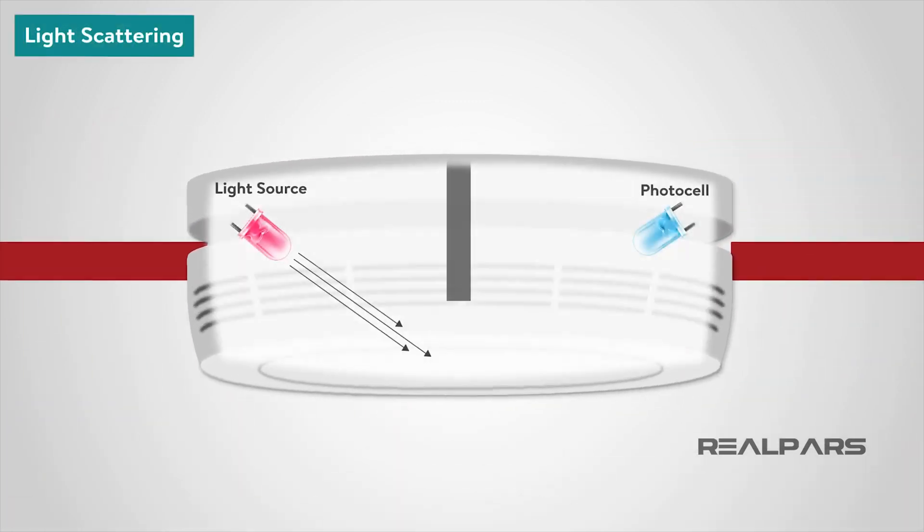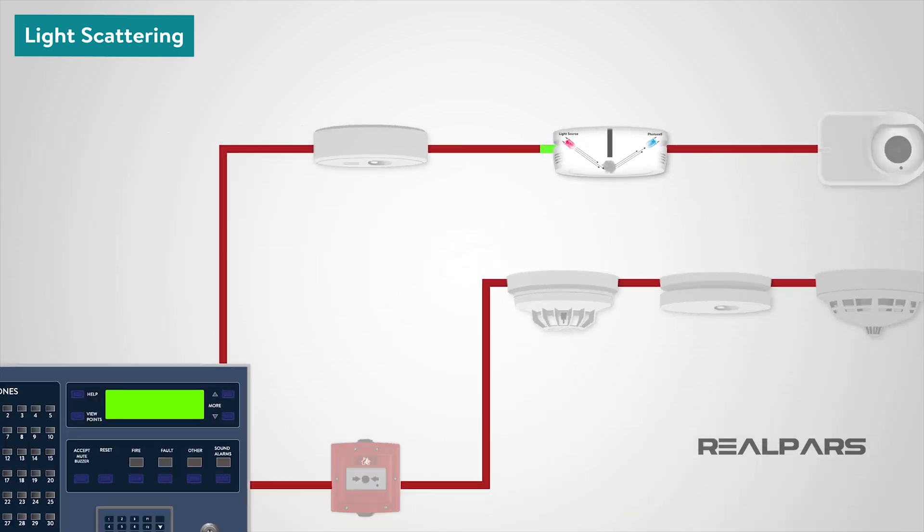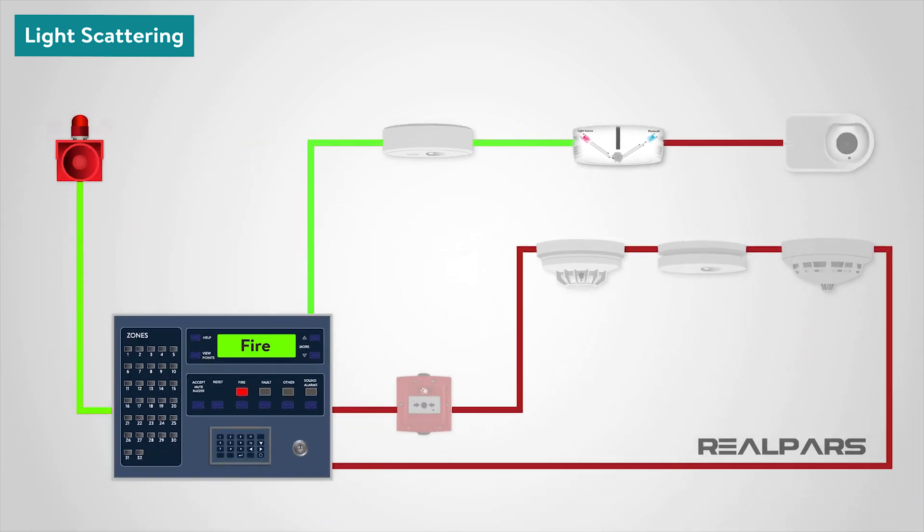The light scattering smoke detector operates on the Tyndall effect. A photocell and light source are separated from each other by a darkened chamber such that the light source does not fall on the photocell. The passage of smoke into the chamber causes the light from the source to be scattered and fall on the photocell. The photocell output is being used to initiate an alarm.